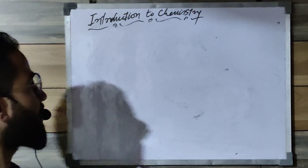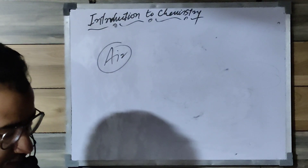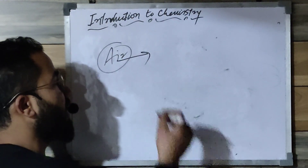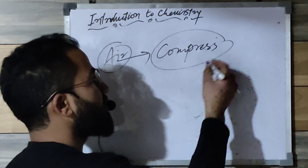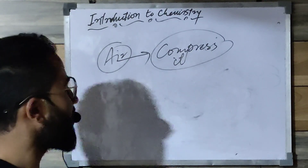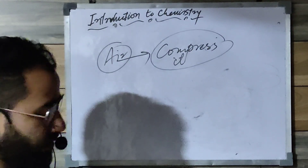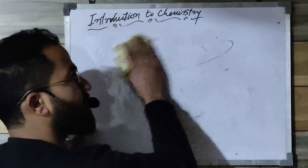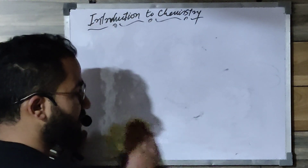Earlier, people had the misconception that air is not matter. But as science advanced, we know we can compress air and it turns into liquid that you can weigh. Actually, it's made up of simple units called atoms, which have mass — atomic mass units. So everything has mass and occupies space. Generally, the entire physical world is matter.